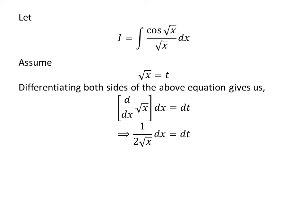As the derivative of square root of x is 1 upon 2 times square root of x, so 1 upon 2 times square root of x times dx equals dt.